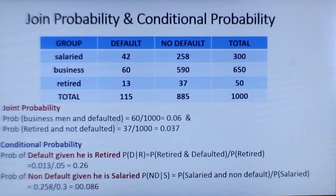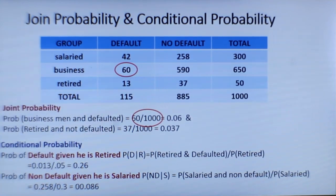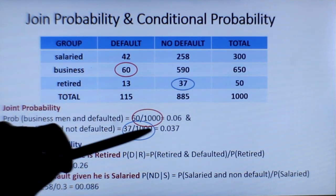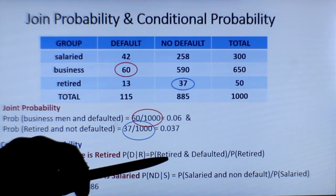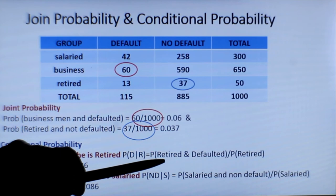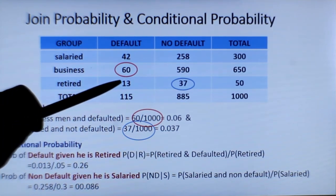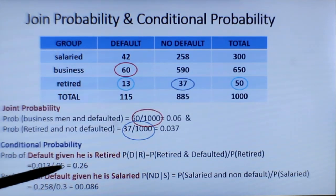Now we will understand joint probability and conditional probability in this example. Joint probability that a person is a businessman and defaulted is 60 over 1000. The probability that a person is retired and not defaulted is 37 over 1000, which is 0.037. For conditional probability, given that a person is retired and also a defaulter, the probability equals the joint probability of retired and defaulted over probability of retired. The joint probability of retired and defaulted is 13 over 1000, which is 0.013, divided by 50 over 1000.